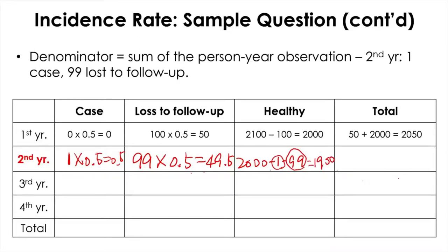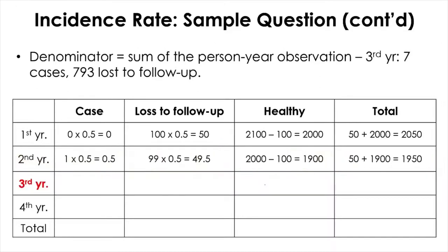That's 99.5, and now we are left with 2,000 minus 1 minus 99, so that's another 100. We have one case and 99 lost to follow-up, so that's 1,900. We add all these: 0.5, 49.5, 1,900—that's 50, 1,900—that's 1,950. Now I think you get the hang of it, so I'll just move on to the next year.